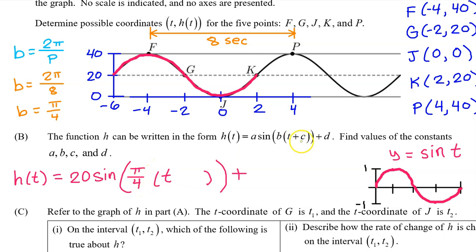In unit 1, we learned that the c value is the opposite of the horizontal translation. Notice that one period of the parent function starts at t equals 0. However, this period of h of t begins at t equals negative 6. Therefore, we are looking at a horizontal translation by negative 6. The c value will be the opposite of that, so positive 6. In the context of periodic functions, a horizontal translation is called a phase shift.